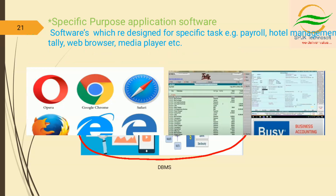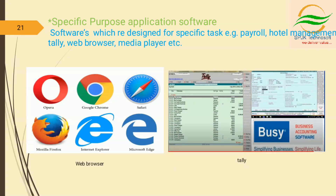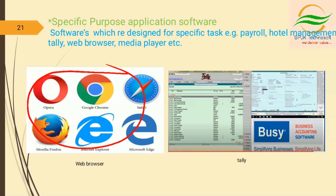Next, specific purpose application software. Software redesigned for specific tasks. We have two examples: web browser and Tally and Busy. A web browser is a specific purpose application software for retrieving, presenting, and traversing information resources on the worldwide web. Web browsers include Opera, Google Chrome, Safari, Mozilla Firefox, Internet Explorer, and Microsoft Edge. Tally and Busy are also known as special purpose application software redesigned for specific tasks.